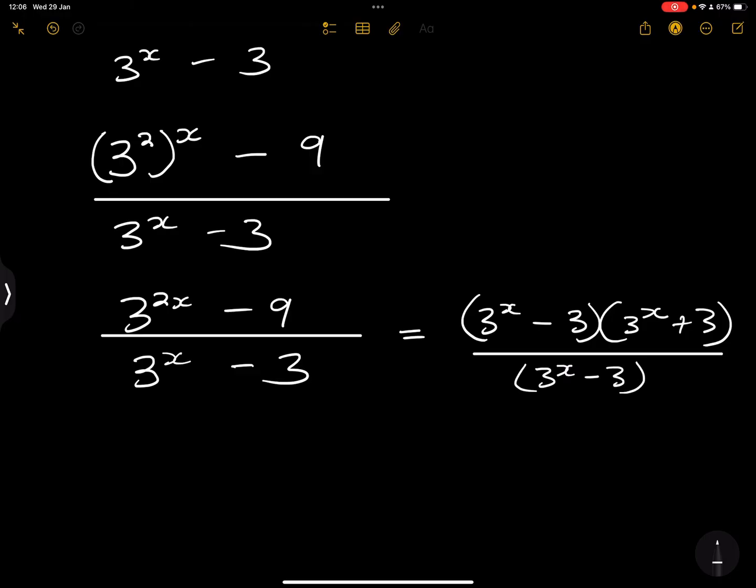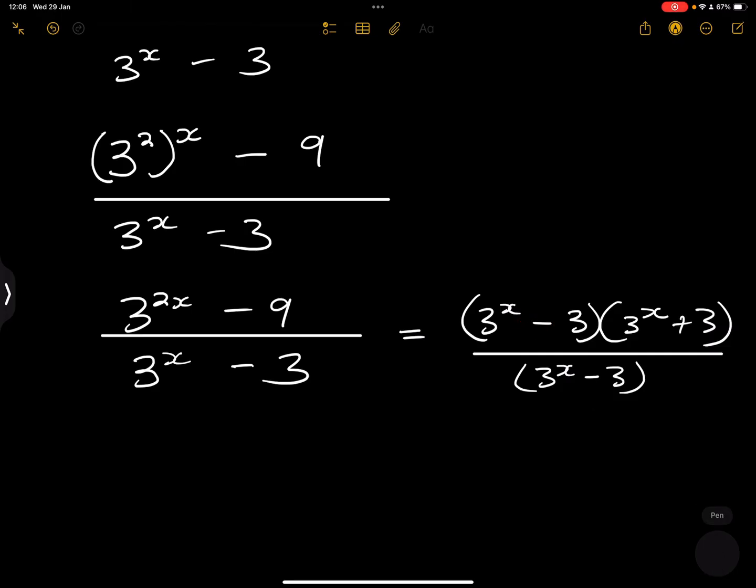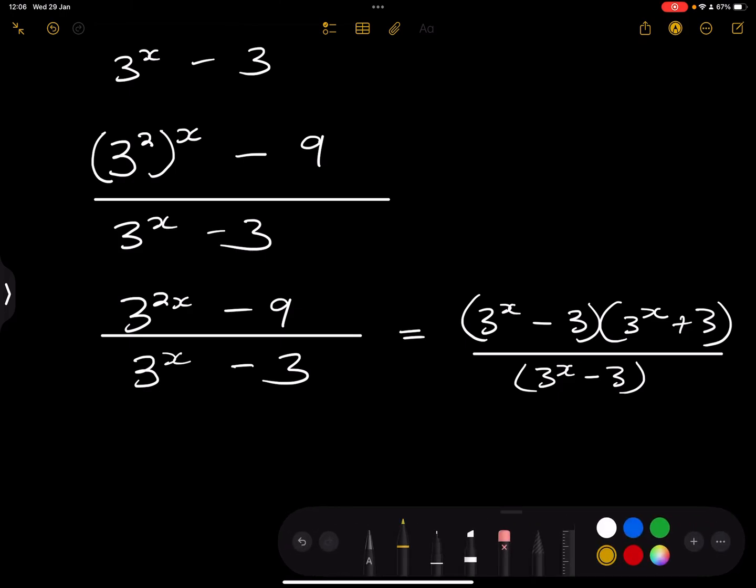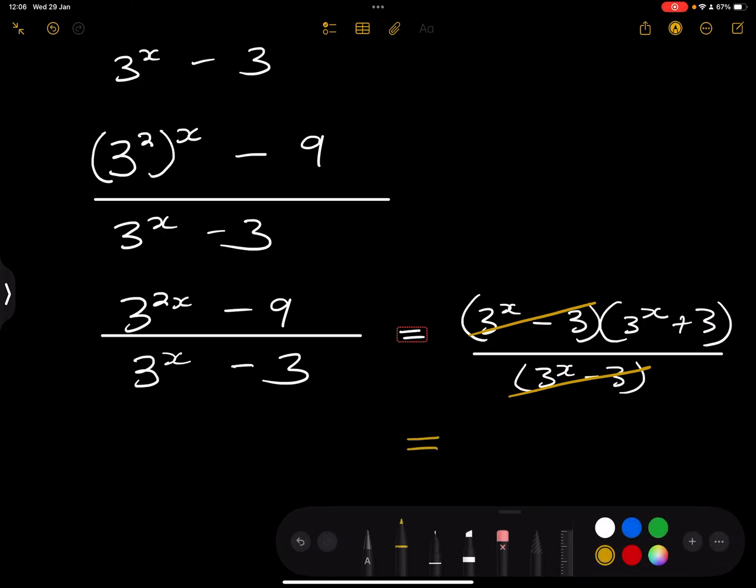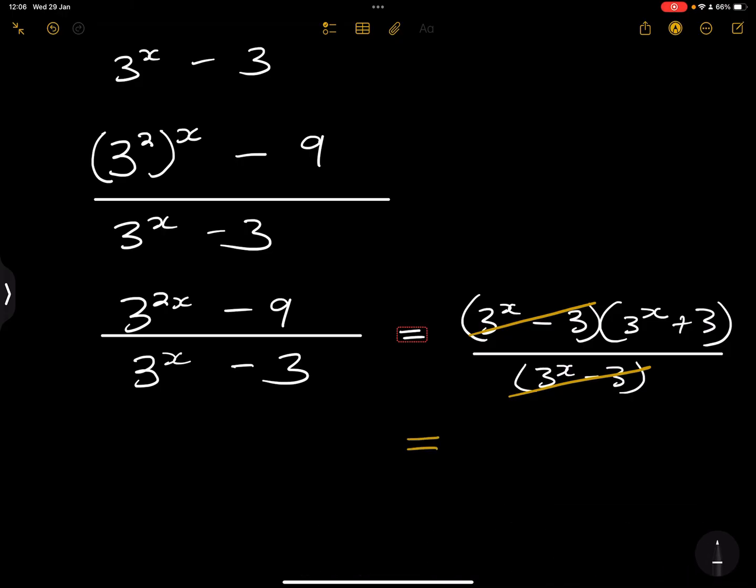Now remember, we didn't have a common factor, but all of a sudden we've got two brackets that are exactly similar on the numerator as well as on the denominator. So what do we do? We are simply going to cancel them out. That means that cancels out with that, and we're simply going to get 3^x plus 3 as our final answer.